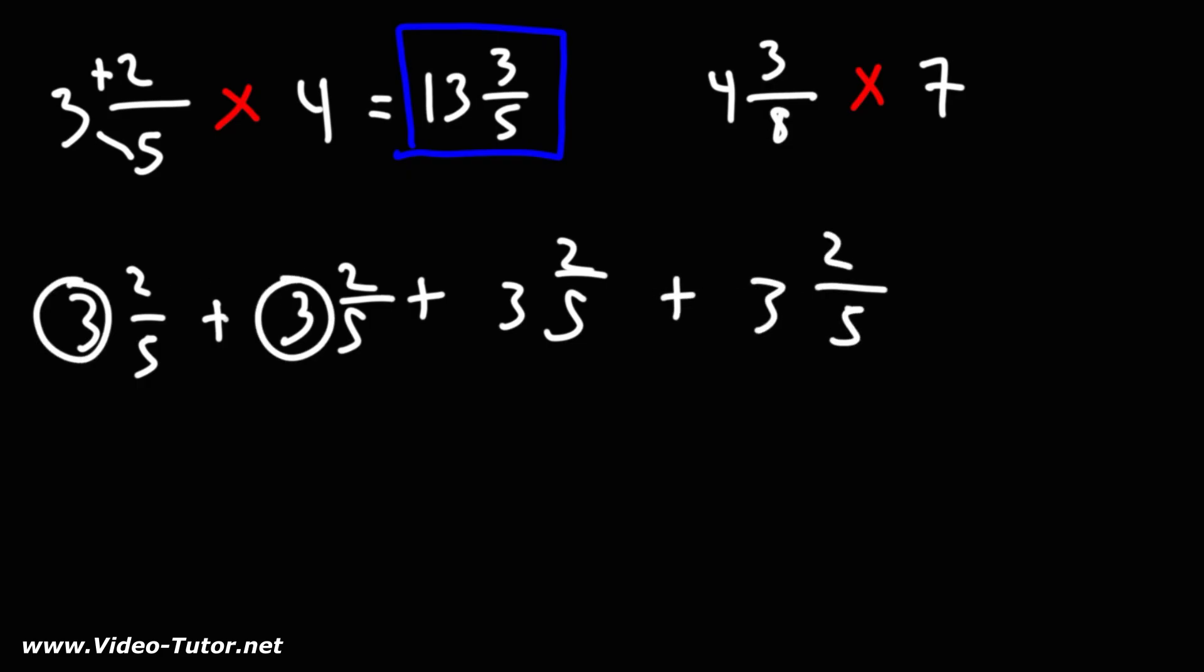So adding 3 four times: 3 plus 3 is 6, plus 3 is 9, plus 3 is 12, or 3 times 4 is 12. Now, 2 fifths, when you add it 4 times, it's like saying 2 times 4 is 8, so that's 8 fifths.